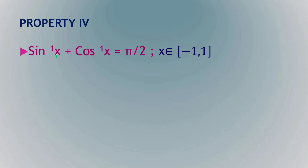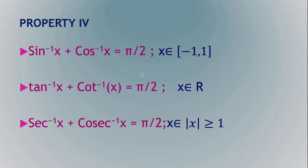The next property is sin⁻¹(x) + cos⁻¹(x) = π/2. In the same way, tan⁻¹(x) + cot⁻¹(x) = π/2, and sec⁻¹(x) + cosec⁻¹(x) = π/2. Let sin⁻¹(x) = y to prove this.